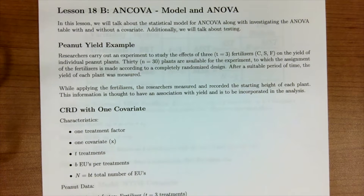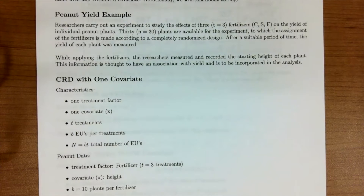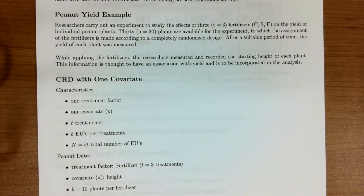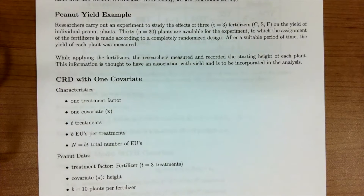Recall from our last lesson, we had the motivating example of the peanut yield, where we were interested in the effect of three fertilizers on the yield of peanut plants in a completely randomized design. In addition to applying the three fertilizers, the researchers measured the starting height of the peanut plants, which we think is associated with the peanut yield. We were interested in how to incorporate this starting height — a continuous variable — into our model, and we discussed introducing it as a covariate.